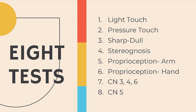The tests are as follows: light touch and pressure touch — those two will have a similar setup so we'll do them in the same video. Then sharp/dull, which is also called superficial pain; stereognosis; proprioception of the arm and the hand, which will also be two different tests but covered in the same video. And then two tests that look at cranial nerve function — the first is about the muscles of the eye, covering cranial nerves 3, 4, and 6, and then cranial nerve 5, which is the trigeminal nerve.